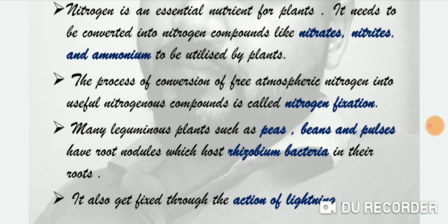Many leguminous plants — generally rabi crops like pea, beans, and pulses — have roots containing nodules which host rhizobium bacteria in their roots. These microorganisms survive as a host. Nitrogen also gets fixed through the action of lightning during thunderstorms.